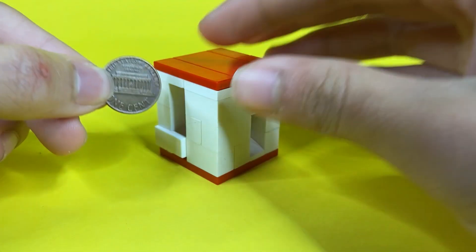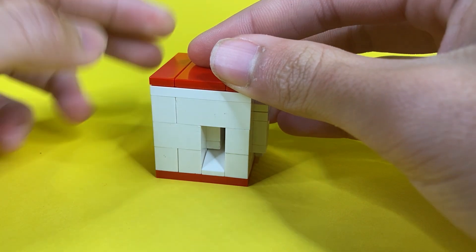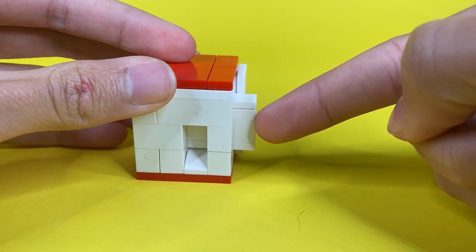To operate it, simply get a penny or any other small coin and insert it into this slot. It should push this draw out, which you then pull out and push back to get a tic-tac.